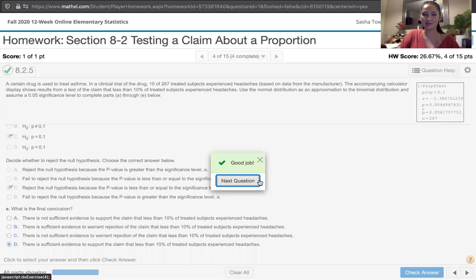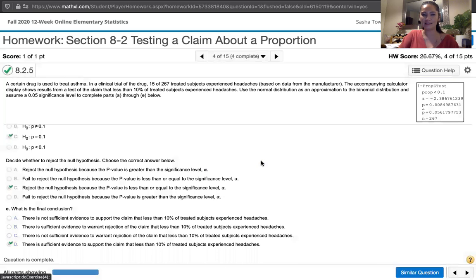All right, I hope that helps you make sense of that calculator output. I really just wanted to do this example so that you would see that lowercase p here is being used for our p-value. That's not the population proportion. And I think you can see from context that it's clearly not the population proportion that you're testing against in your null hypothesis because of the value of the 0.008498 and so on. But I wanted to show you explicitly. So I hope that helps.